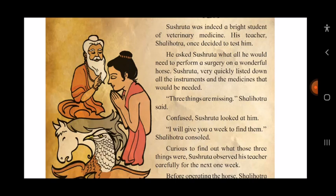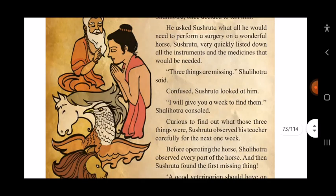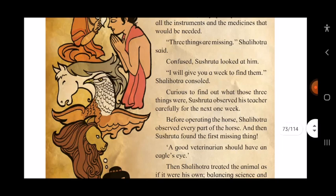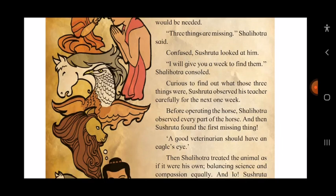Shalihotra told him, 'I will give you a week to find them.' Sushruta was consoled — consoled means comforted — and was curious to find out what those three things were. So he observed his teacher carefully for the next one week.